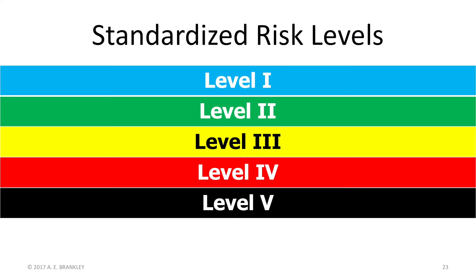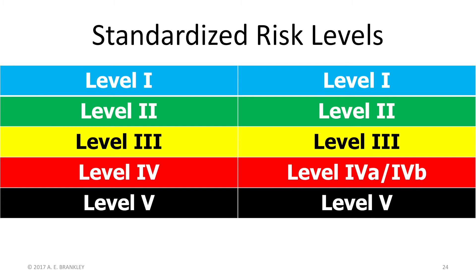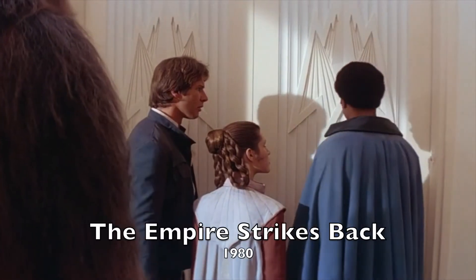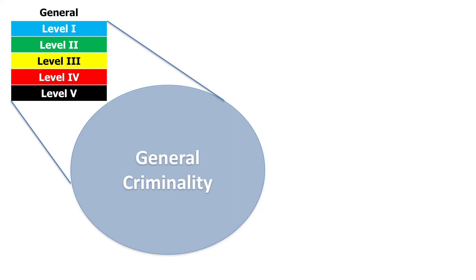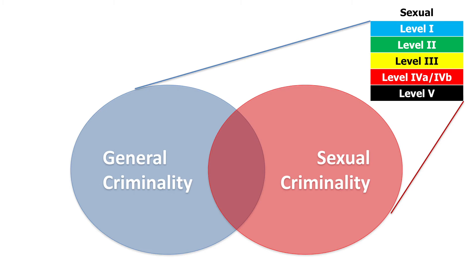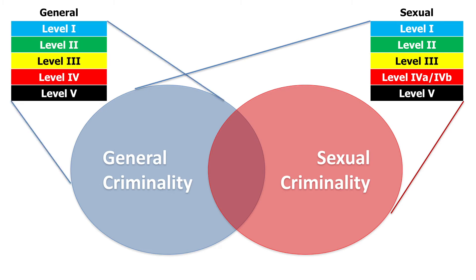Before we begin our discussion on the standardized risk levels, I'm going to have to rip off a bandage and let you know that I will actually be talking about two parallel types of risk. And before you think of yourself as Han Solo being betrayed and handed over to Darth Vader, all I am saying is that one series of risk levels pertains to risk for general offending, and the second is specific to sexual offending. This type of distinction in risk should be familiar to most. It's like saying Bob's risk is high for new sexual offences against children, but he has no history of non-sexual crime, and we have no evidence to believe his risk is of concern in that area. As you can see, there is a great deal of overlap between these two frameworks, but I will let you know when they are different.